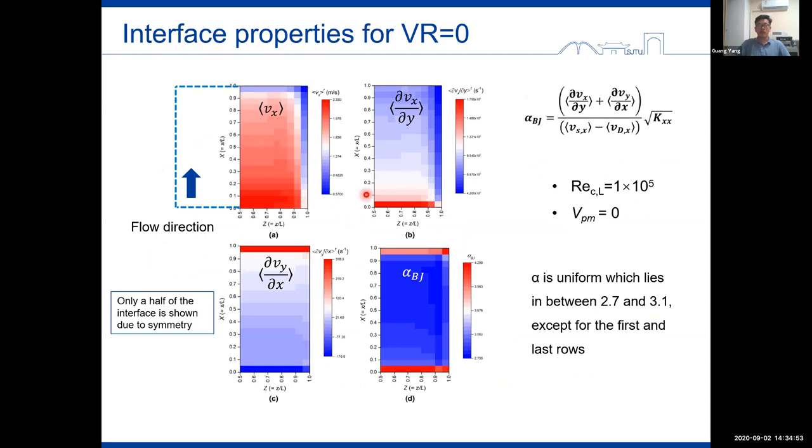Here this slide shows the averaged slip velocity at the interface, the velocity gradient in x and y directions, and also the distribution of alpha in the case of the zero velocity ratio. Due to symmetry, only a half of the interface is shown. And the flow goes from the bottom to the upward side. We can see that the alpha value is quite uniform at the interface, which varies between about 2.7 to 3, except at the very beginning and at the end part of the interface.